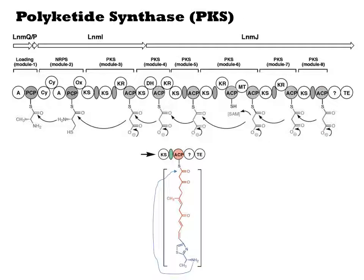It is very common to see hybrid PKS and NRPS products. The two classes of proteins are evolutionarily related and structurally similar. Usually it is the peptide built first, which is used as the initiating carboxylic acid for PKS polymerization.